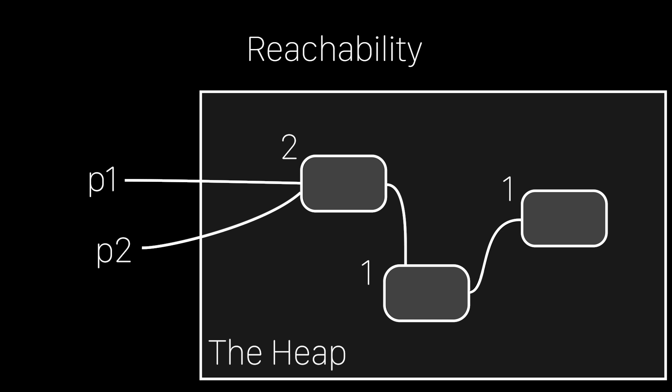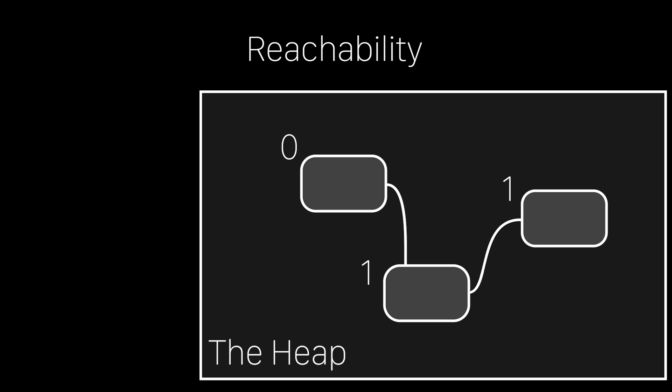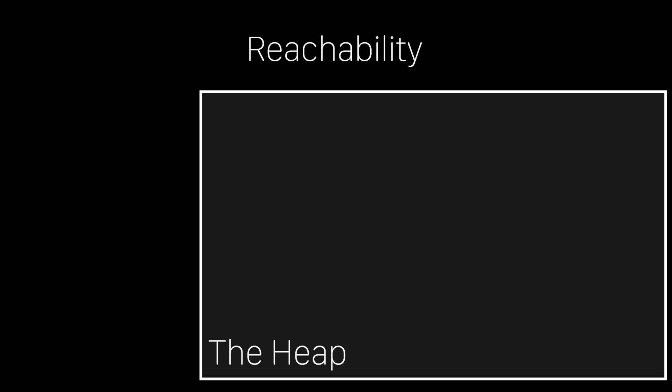But as the program runs along, things change. Maybe one of these pointers gets pointed to something else. And maybe this other pointer was a local variable, and the function that it was declared in ends, so that pointer goes out of scope and now it doesn't exist. Each time one of those pointers stopped pointing to this block of memory, the reference counter was decremented, and now it is zero — meaning no references or pointers point to this block of memory. So the head of the list is no longer reachable from the program. At this point, I can safely say that this node is garbage and I can clean it up. And once it's gone, the next one can be cleaned up and so on until we've cleaned up the entire list.